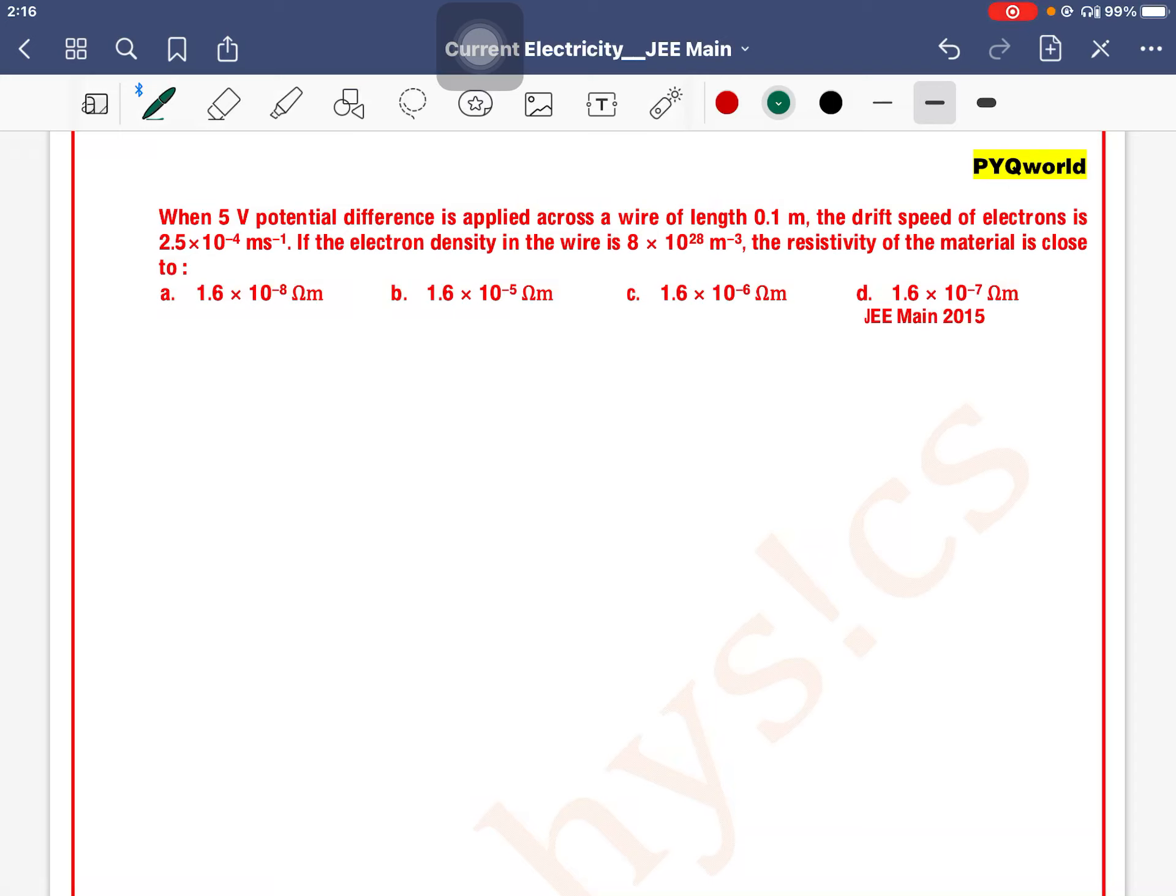When 5 volt potential difference is applied across a wire of length 0.1 meter, the drift speed of the electron is 2.5 × 10^-4 meter per second. If the electron density is...